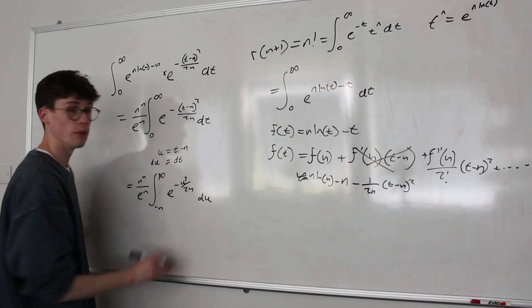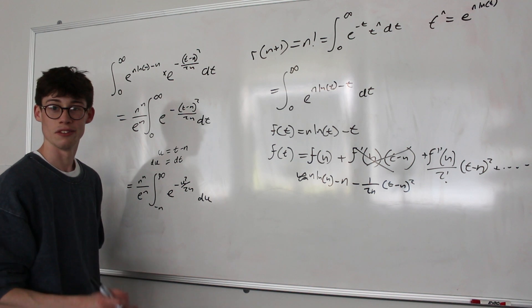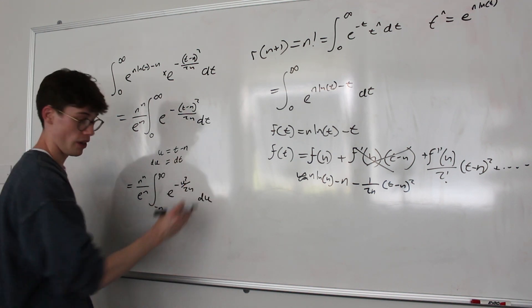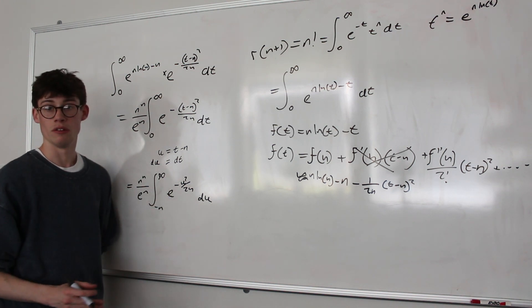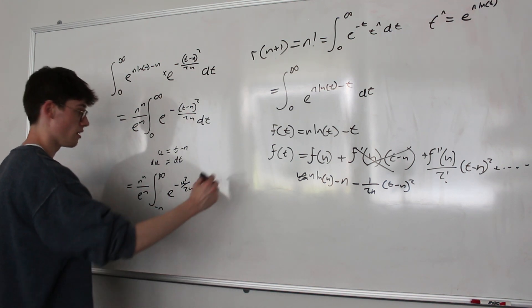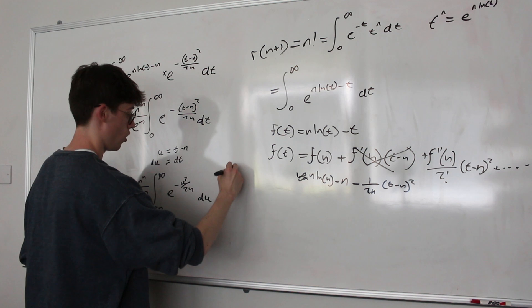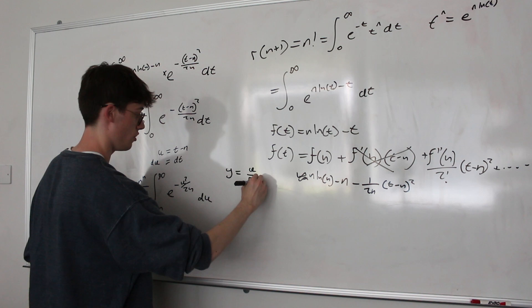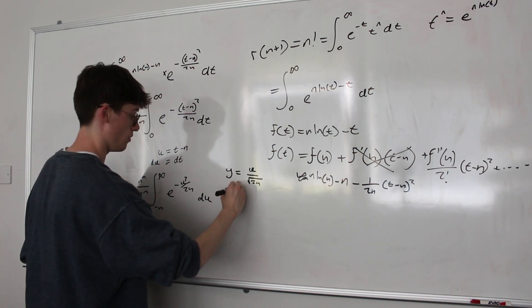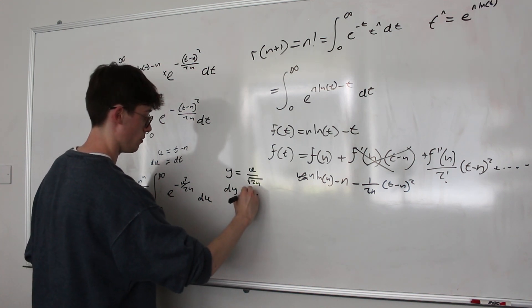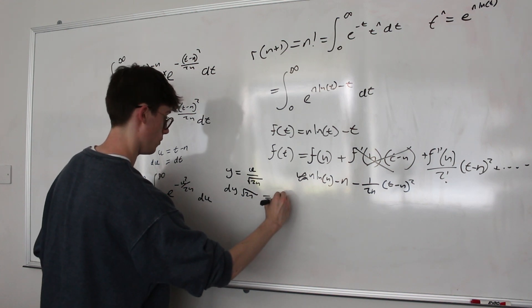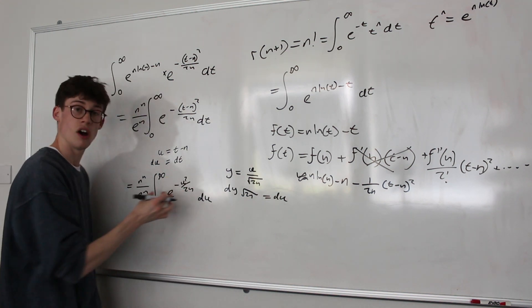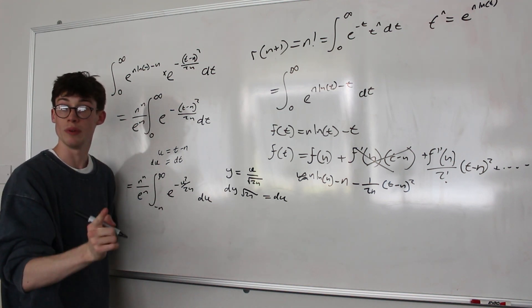And we're almost there with this now. I think the nicest way to get this into the form of a Gaussian integral would be to say, alright, well, we've got an exponent of u squared over 2n, which means if I make a substitution y equals u divided by root 2n, which would of course leave me with dy times root 2n being equal to du, then I would be able to write this entire exponent as just one thing squared, and it would be the Gaussian integral.